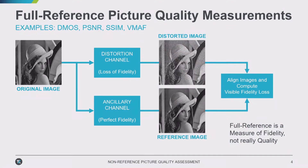With picture quality, there are a couple of different ways of making a measurement. First, we'll consider what I call a full reference picture quality measurement. Various algorithms do this — DMOS, which stands for differential mean opinion score, PSNR, structural similarity, and VMAF, which is the Netflix-developed measurement. All of these are examples of a full reference measurement.